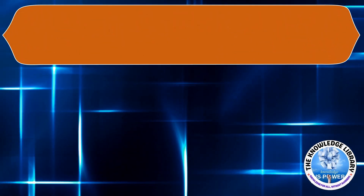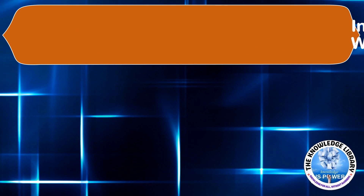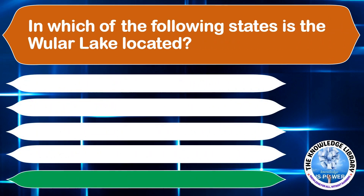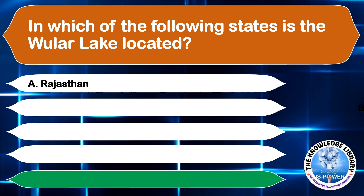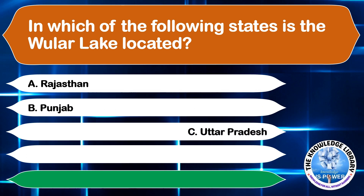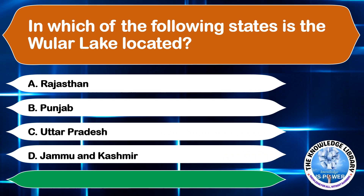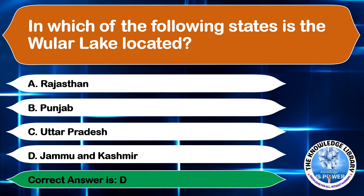In which of the following states is the Wular Lake located? A. Rajasthan, B. Punjab, C. Uttar Pradesh, or D. Jammu and Kashmir. The correct answer is option D, Jammu and Kashmir.